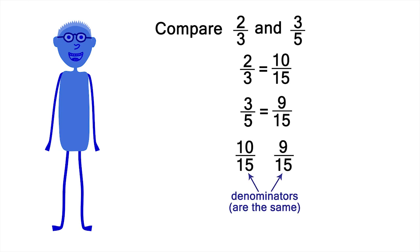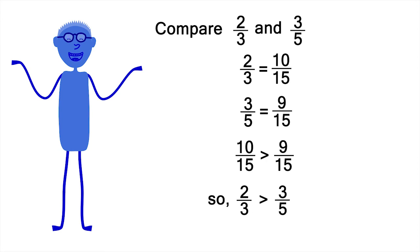Now we can compare the numerators, because the denominators are the same. Ten is bigger than nine. Or, ten-fifteenths is bigger than nine-fifteenths. Which means, two-thirds is bigger than three-fifths.